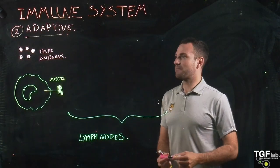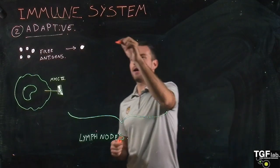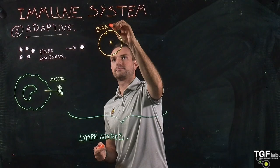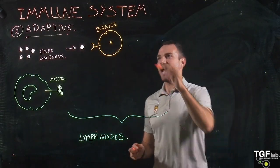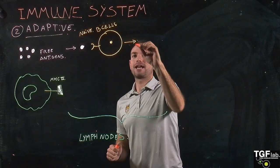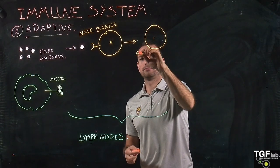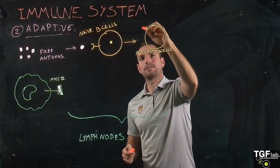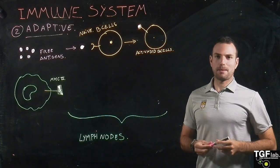We have different processes. So we have the free antigens, and the free antigens are going to be recognized by the B cells. Before they recognize the free antigens, they are going to be naive B cells. Then, once they recognize, they are going to change their gene expression and become activated B cells — because the free antigen binds to the antigen receptor in the activated B cell membrane.